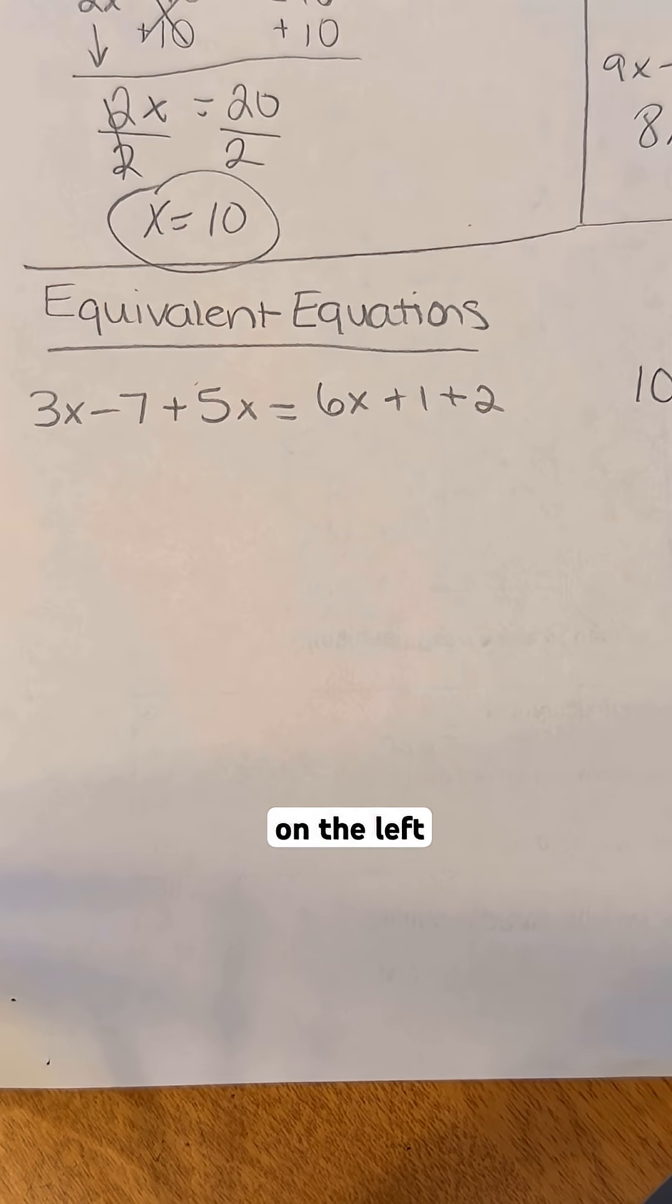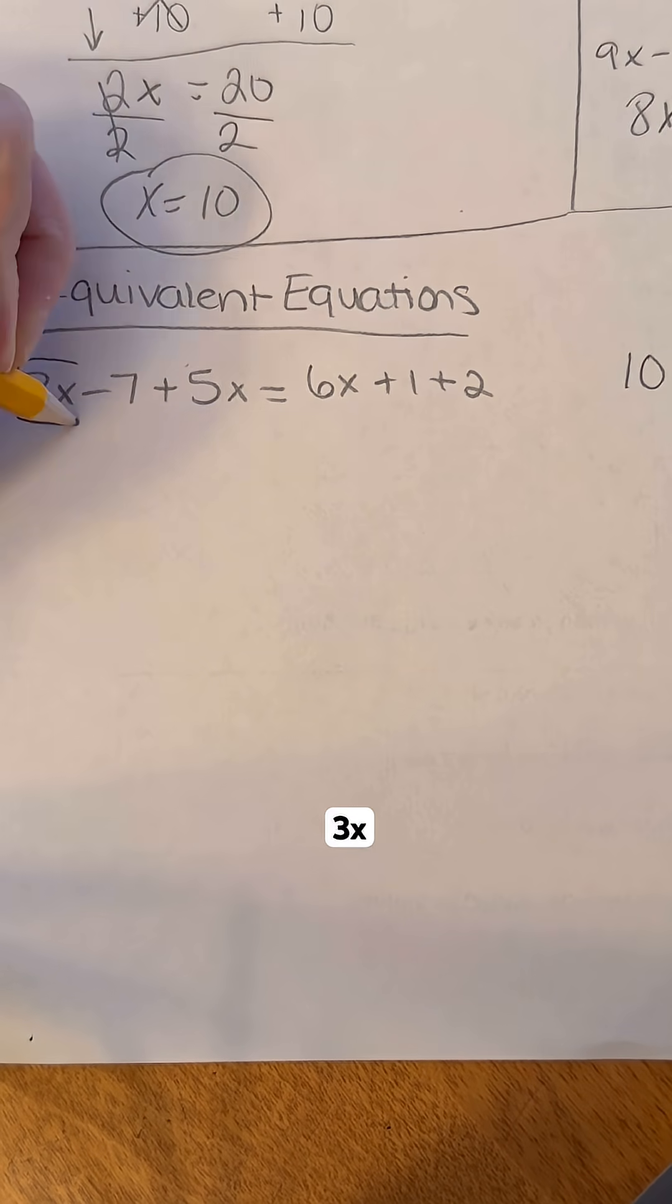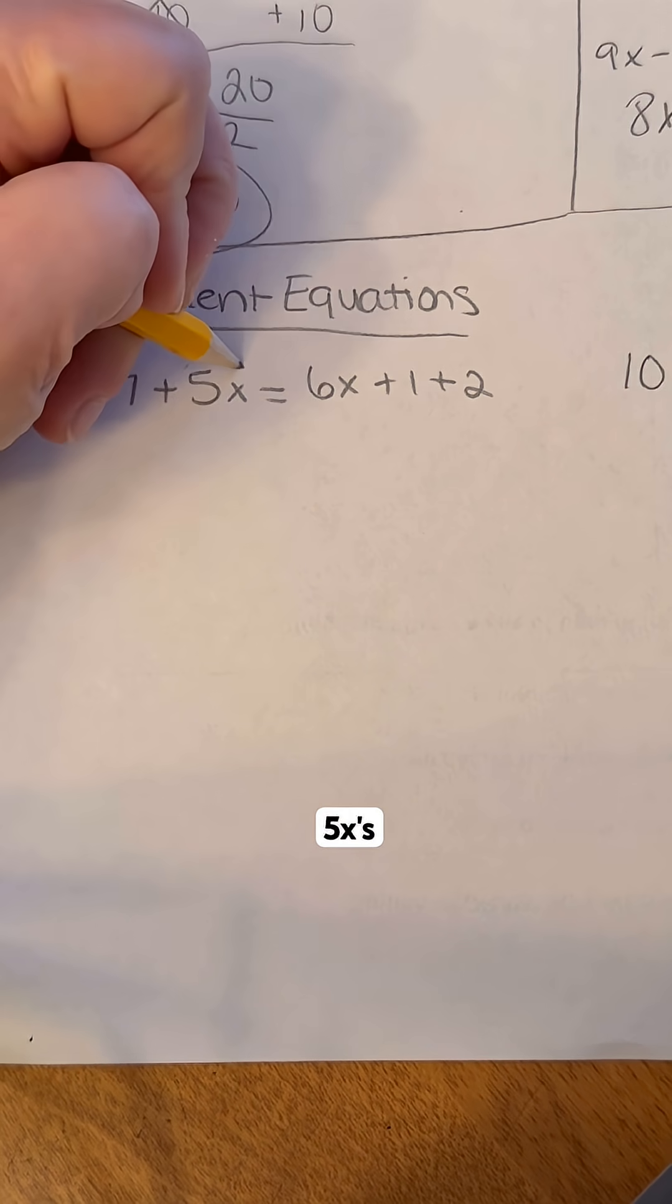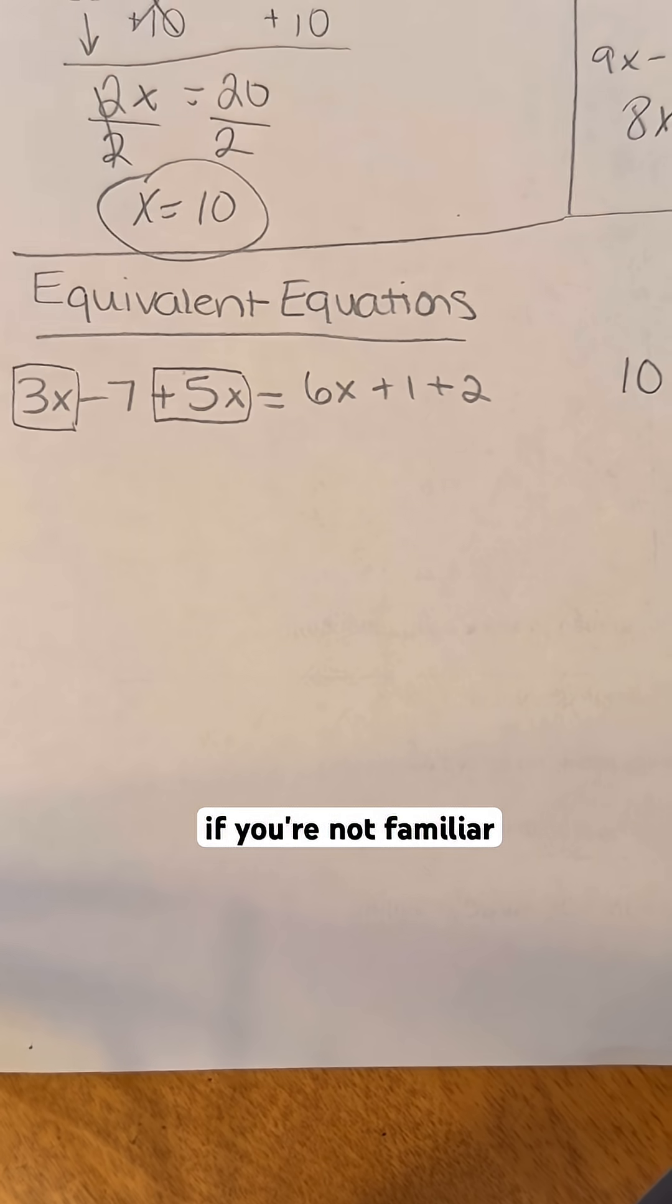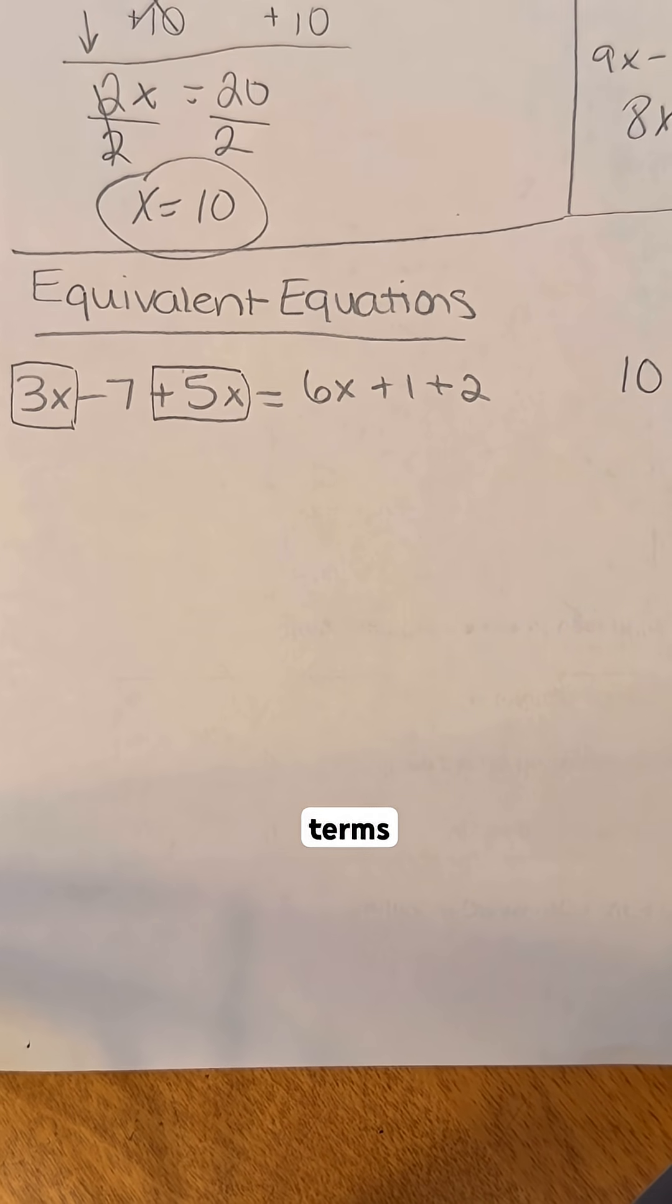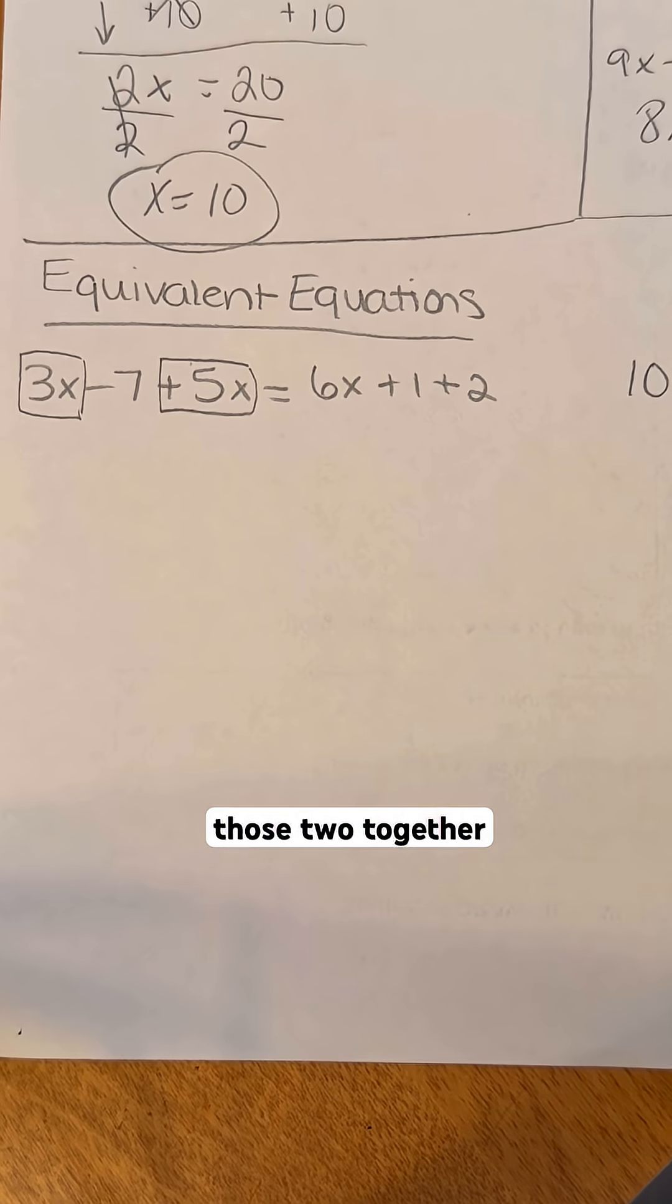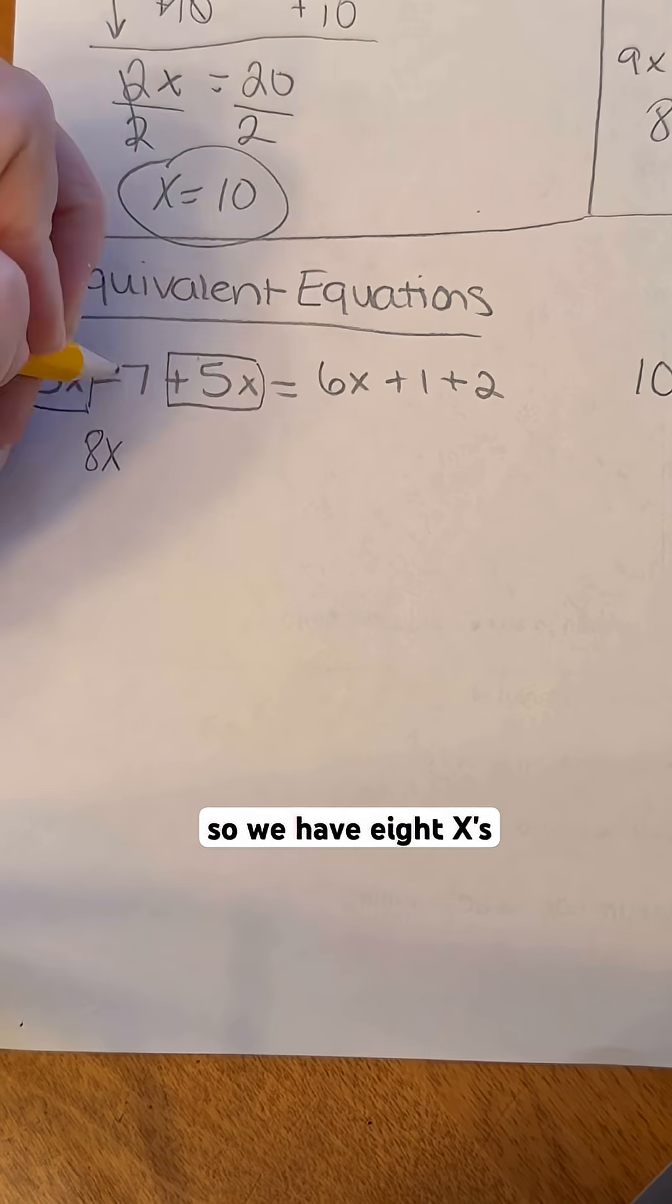So on the left-hand side first I'm going to see what I have that's alike, which I do have two things alike. We have the 3x, and then we also have the 5x. We can combine those because they are like terms, and if you're not familiar with like terms, make sure you check out the playlist on combining like terms. We're just going to add those two together. 3 plus 5 is 8, and those are x's, so we have 8x.